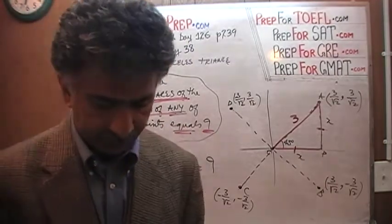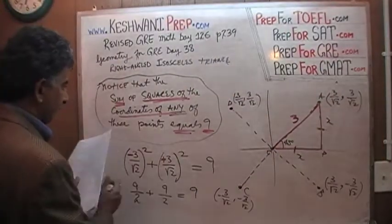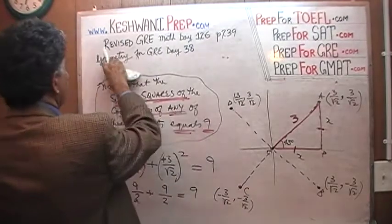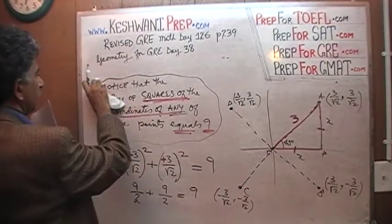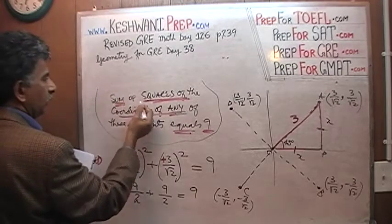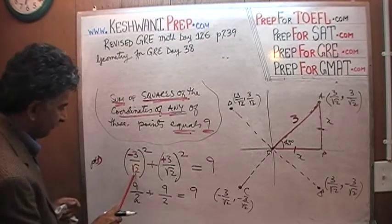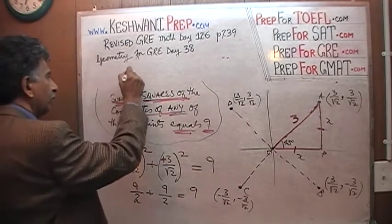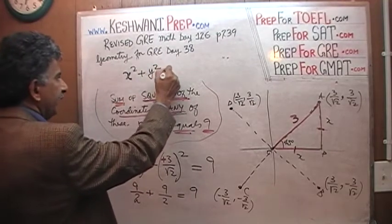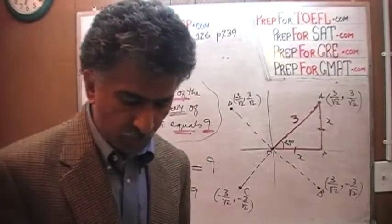How do we write that? The sum of the squares of the coordinates of any point: you take the x-coordinate of any point, square it, take the y-coordinate of any point, square it, and that equals 9. Voilà — x squared plus y squared equals 9. That is a very special equation — we'll talk about that in a second.